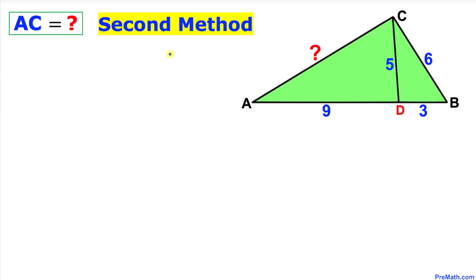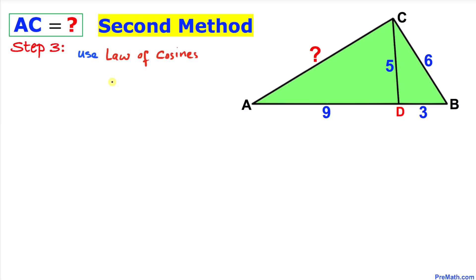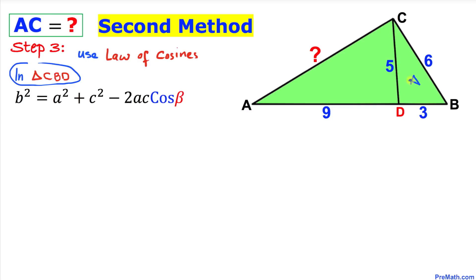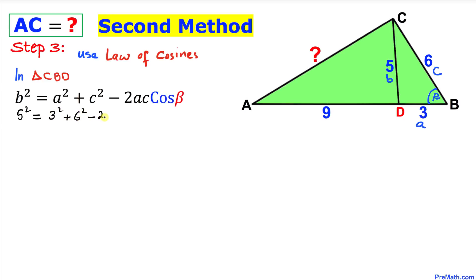Here is our second method, using trigonometry and the law of cosines. The law of cosines states: B² = A² + C² − 2AC·cos(β). Let's focus on triangle CBD, calling this angle β. The opposite side is B, and the other two sides are A and C. Filling in: 5² = 3² + 6² − 2(3)(6)cos(β).